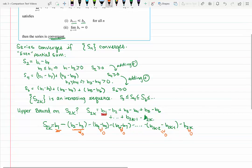As a result, we get that S sub 2k is bounded above by B1 because every even partial sum is equal to B1 minus a collection of positive numbers. Isn't that cool?